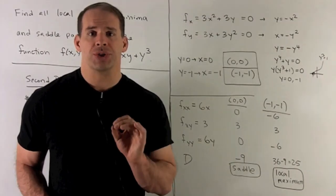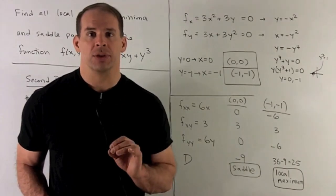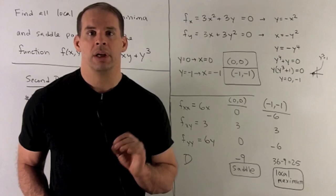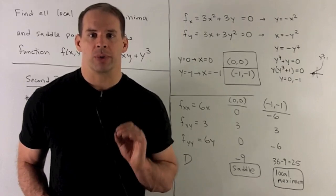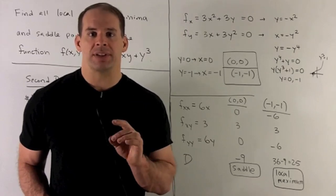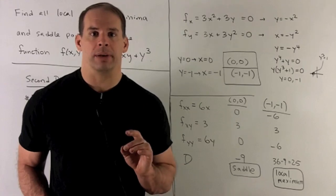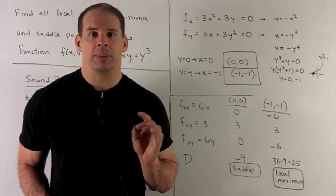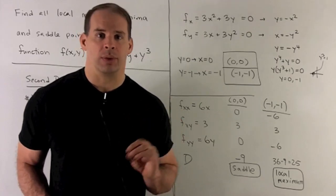Let's find where the partials are equal to 0 at the same time. So, let's get our critical points. Partial with respect to x. We treat x as the variable, y as a constant. So, I'll get 3x squared plus 3y, set it equal to 0.